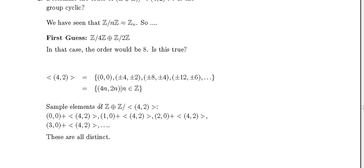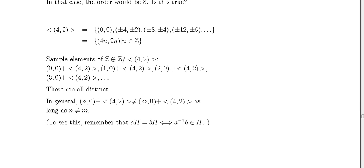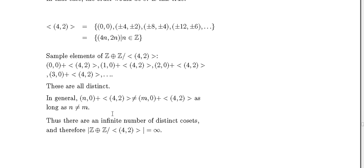All these elements of this group are distinct. In general, the element (n,0)+⟨(4,2)⟩ is different from (m,0)+⟨(4,2)⟩ as long as n≠m. As a quick note: recall that aH = bH if and only if a⁻¹b is in H, and this will not happen here if n is different from m.